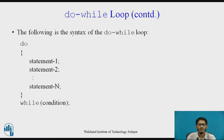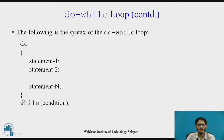This is the syntax of the Do While Loop. We see the 'do' keyword followed by the opening curly brace of the loop. Then we have a block of statements to be executed, followed by the closing brace, and at the end the 'while' keyword with the condition to be checked inside the round brackets.